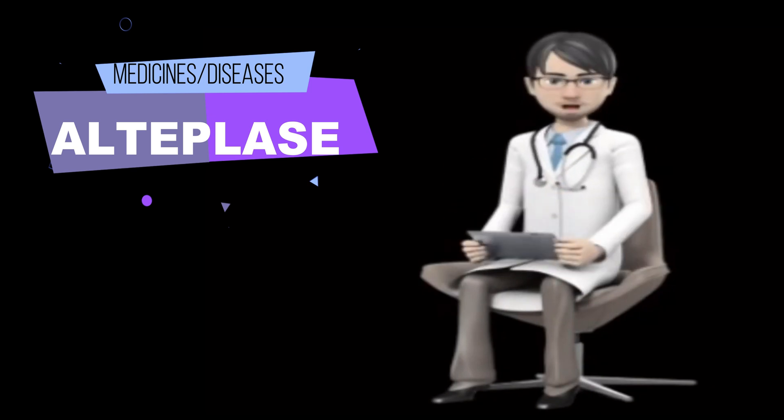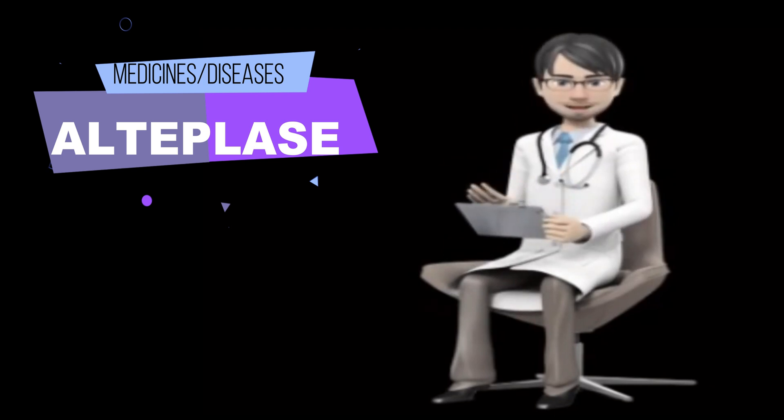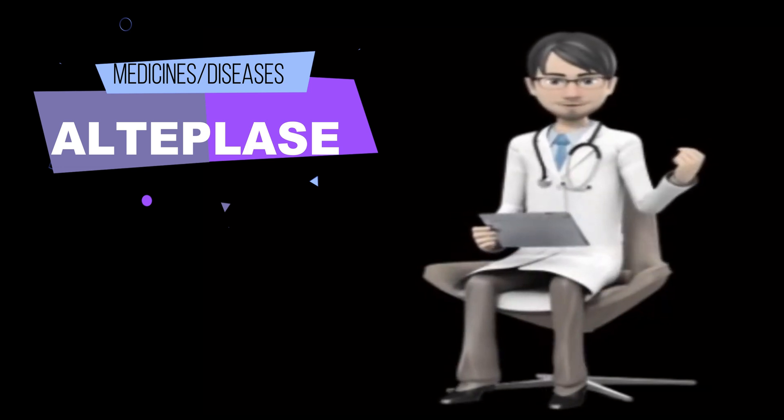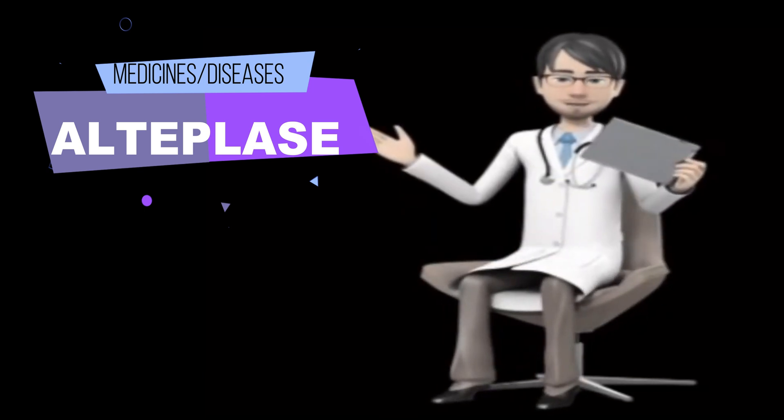Alteplase is also used to treat a blood clot in the lung, pulmonary embolism. Alteplase is also used to dissolve blood clots that have formed in or around a catheter placed inside a blood vessel. This improves the flow of medicines injected through the catheter, or blood drawn out through the catheter.